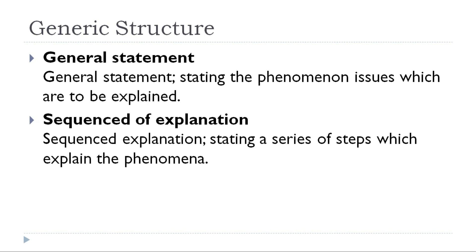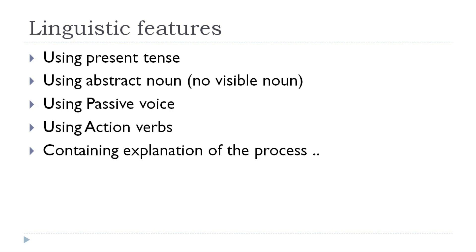General statement consists of stating the phenomenon or issue which is to be explained. It is similar to descriptive text with issue and exposition. The second structure is sequence of explanation, which states a series of steps that explain the phenomena. The explanation text and procedure text have many similarities, which we will discuss later.